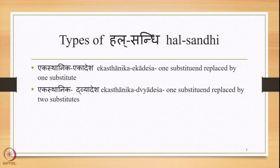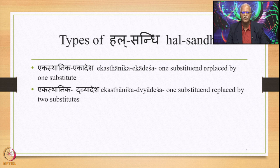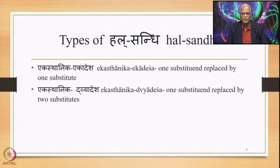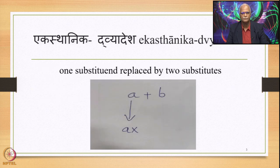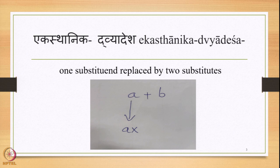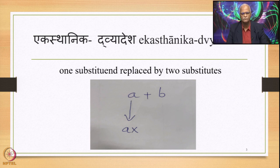Ekasthanika Ekadesha is one substituent replaced by one substitute. Ekasthanika Dvyaadesha means one substituent replaced by two substitutes. Ekasthanika Dvyaadesha is the type of Hal-Sandhi we are going to study now. So far we have been studying Ekasthanika Ekadesha, including Shtutva Sandhi,